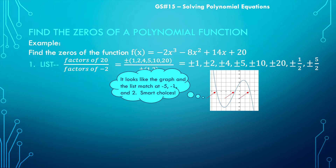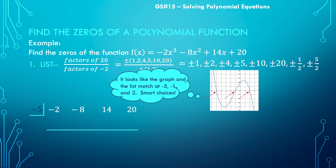I'm going to choose one of these values and see if it works with synthetic division to verify it's an actual zero. It doesn't matter which one you choose — I'll start with negative 5. Putting negative 5 in the box for synthetic division with my coefficients: bring down -2, multiply by -5 to get +10, add to -8 to get +2, multiply by -5 to get -10, add to 14 to get 4, multiply by -5 to get -20, add to 20 — remainder of 0. So negative 5 is a zero.